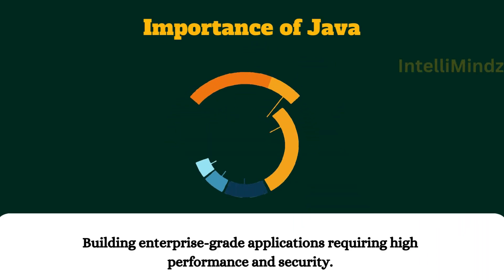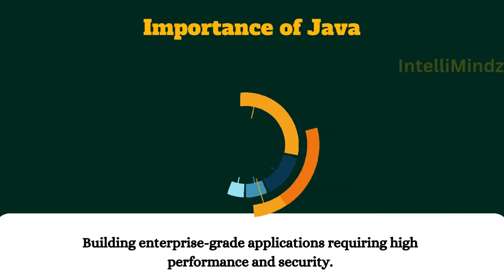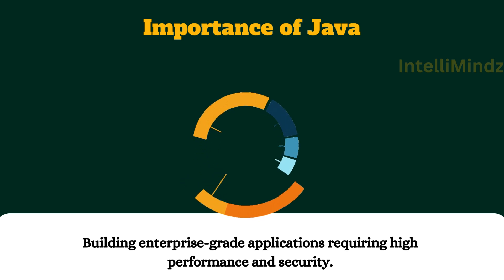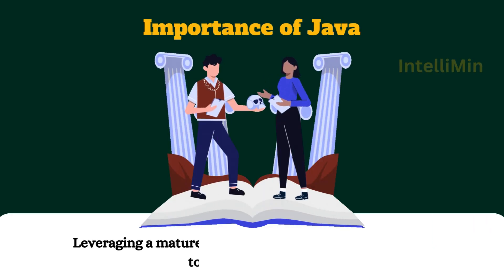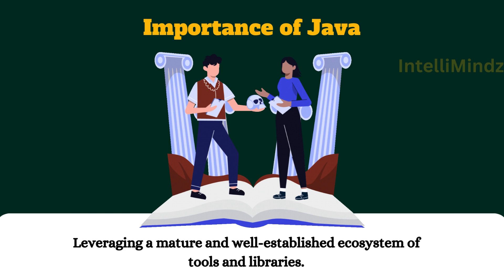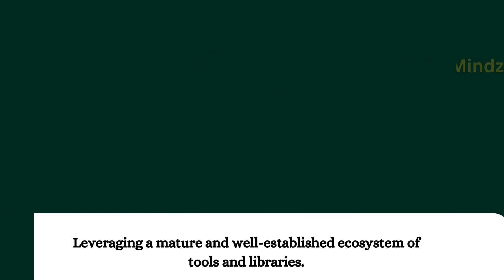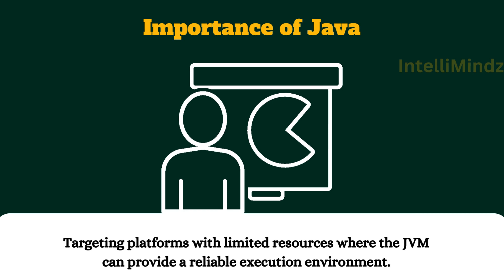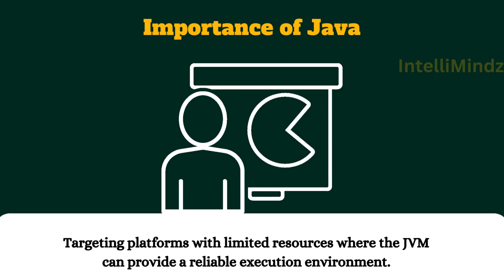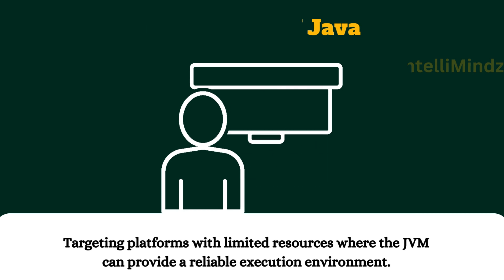Importance of Java: Java is used for building enterprise-grade applications requiring high performance and security, for leveraging a mature and well-established ecosystem of tools and libraries, and for targeting platforms with limited resources where the JVM can provide a reliable execution environment.